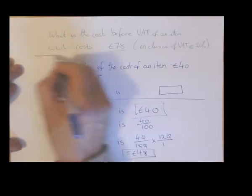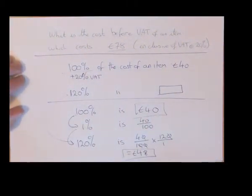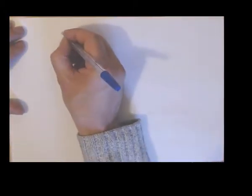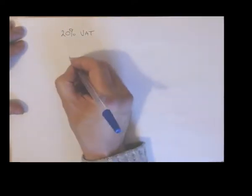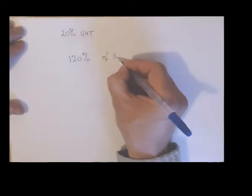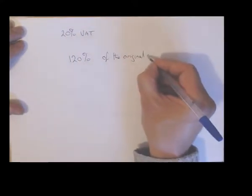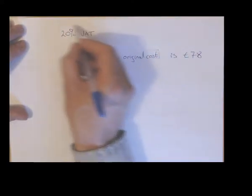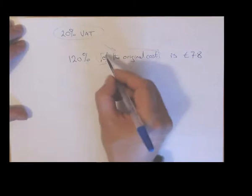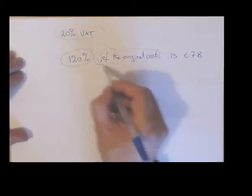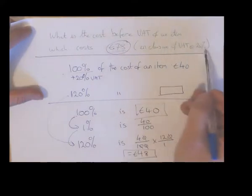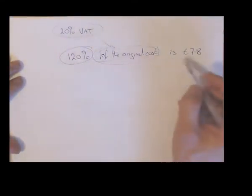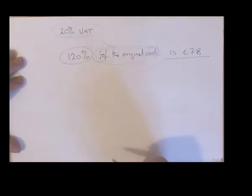The reason we did that was so that when we come to a question like this we could figure out what to do. On this question you already have VAT of 20% included, so you know that 120% of the original cost is 78 euro. The 78 euro includes VAT, so we know that 120% equals 78 euro.